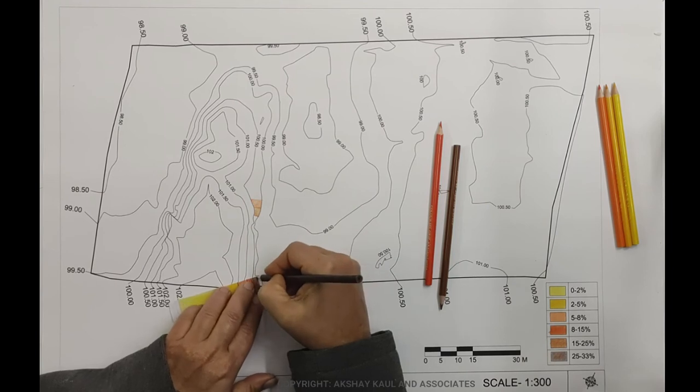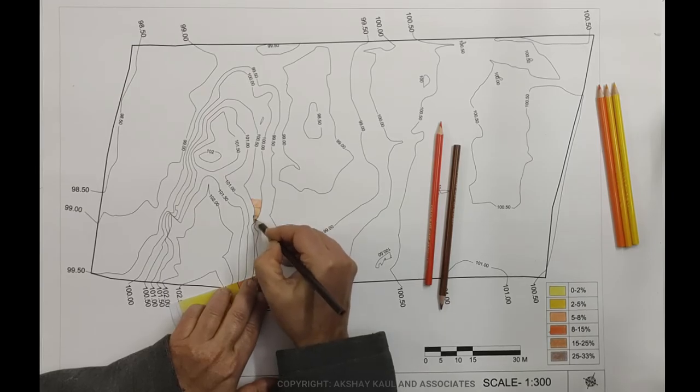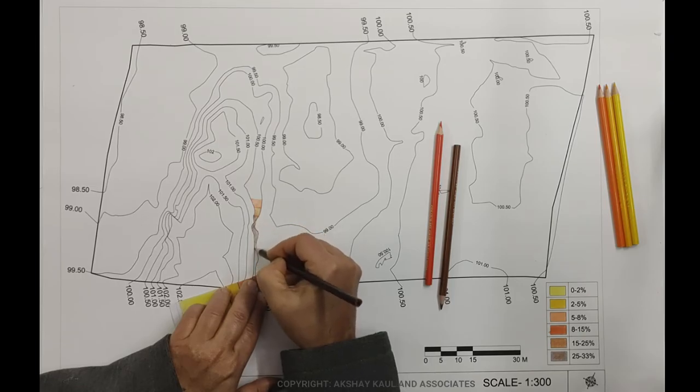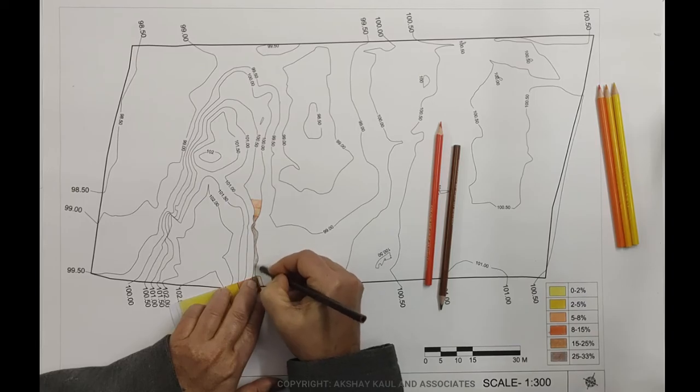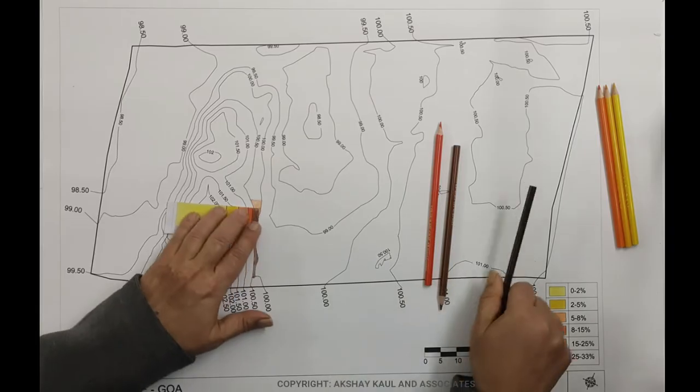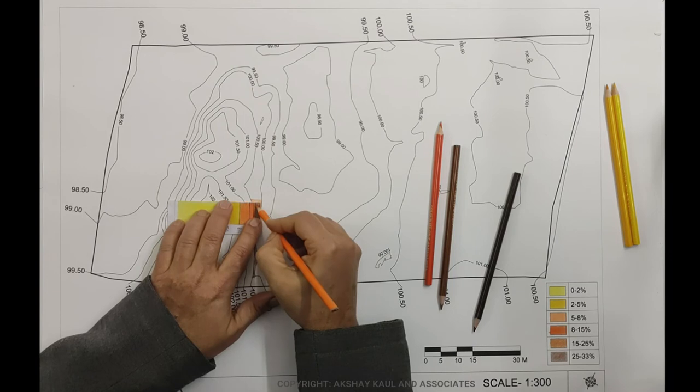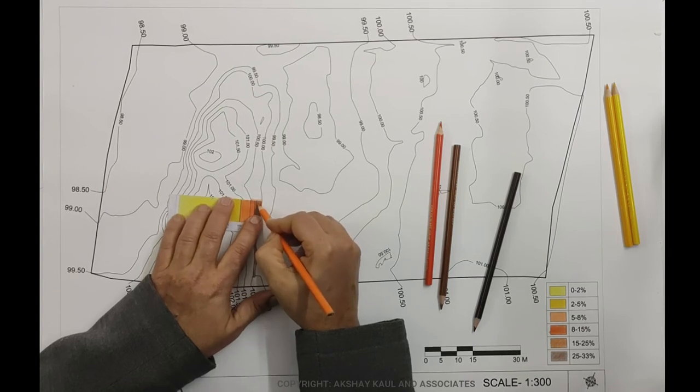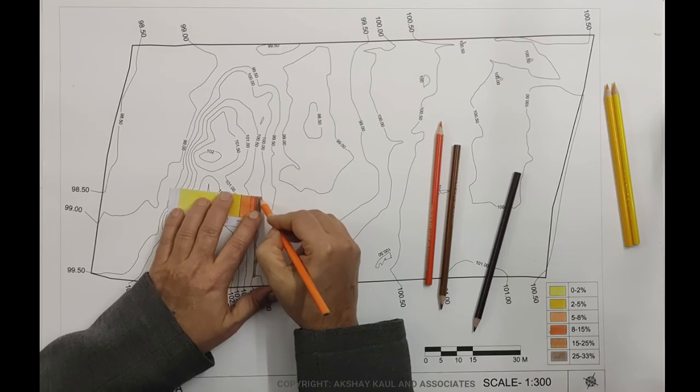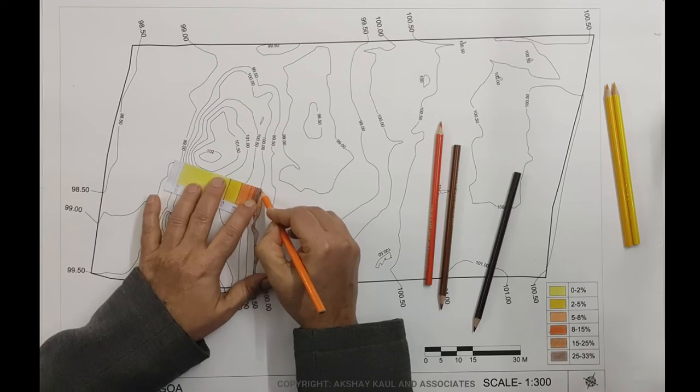Now you can move ahead here. It's very clear you are in the zone of 5 to 8% slope from here onward. Move it perpendicular all the time.